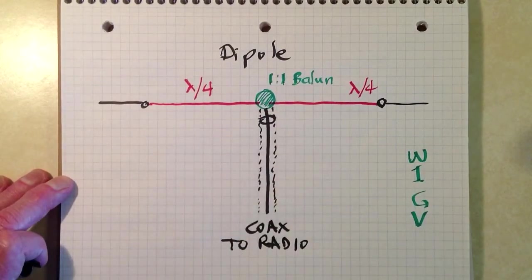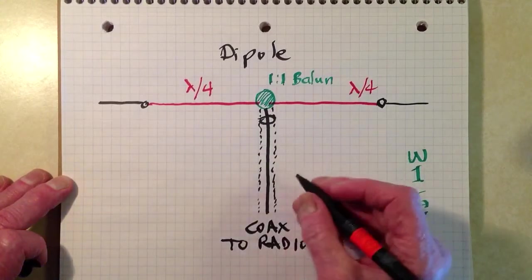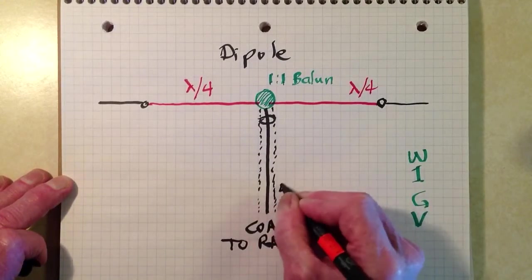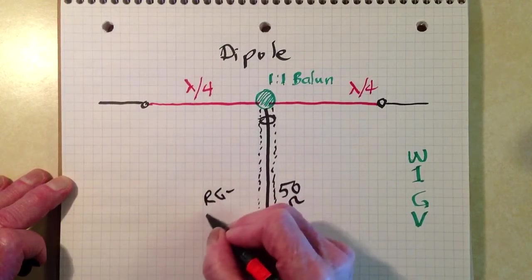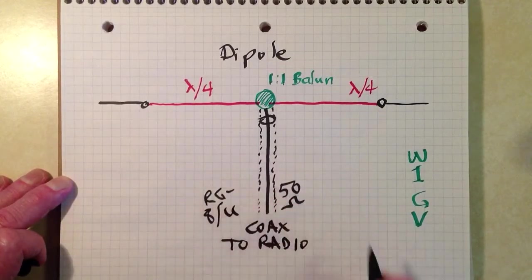A balun in the center, a one to one balun transformer ideally, and then fed with coaxial cable, 50 ohm coaxial cable, something like RG8U to the radio.